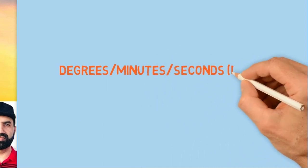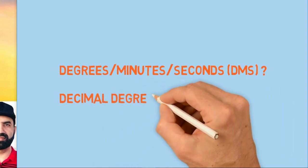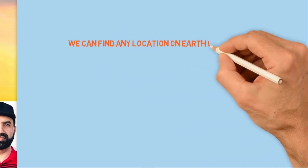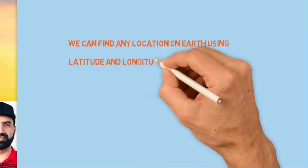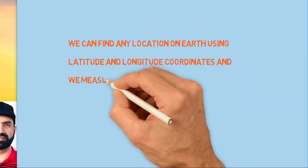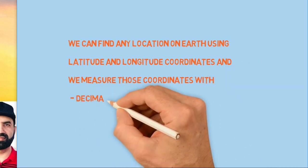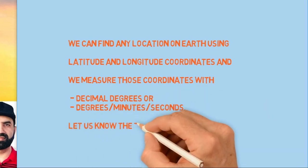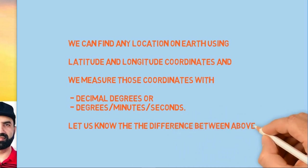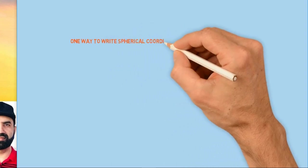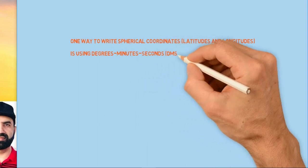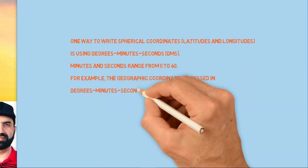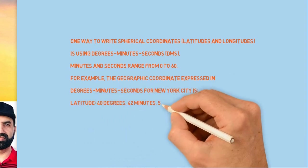What are degree minute seconds and decimal degrees? We can find any location on earth using latitude and longitude coordinates, and we measure those coordinates with decimal degrees or degrees minutes and seconds. One way to write spherical coordinates is using degrees, minutes, seconds. Minutes and seconds range from 0 to 60. For example, the geographic coordinate system in degree minute seconds for New York City is this one, and here is an example with the map.